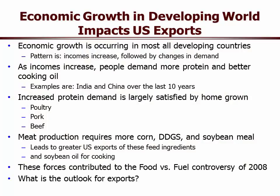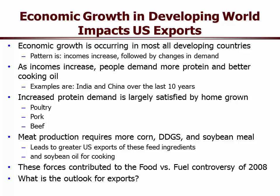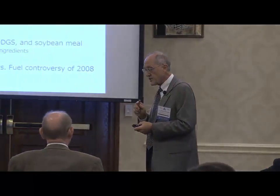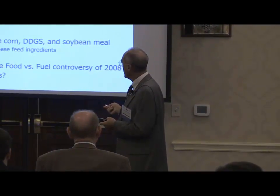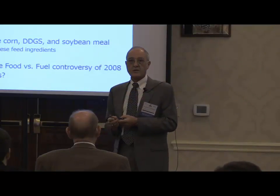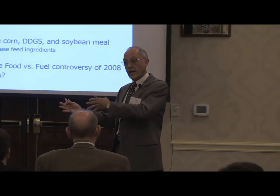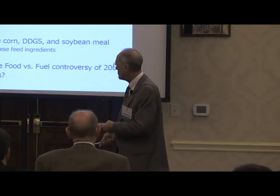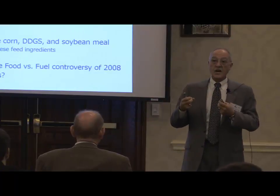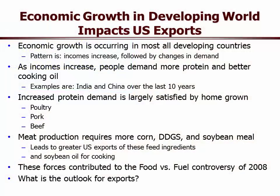Countries like China and India bought a lot of cooking oil and increased their demand for imports of corn, soybean meal, and DDGs in order to feed their poultry and pork industries. The main thing here is the change in income in these countries helped shift our demand function out so far that in 2008 we had the food-versus-fuel controversy. Our analysis said it wasn't just ethanol — there was such a shift in the demand for protein around the world during that time that, combined with ethanol and a cheap dollar allowing more exports, it resulted in some of the highest corn and soybean meal prices we'd ever seen.